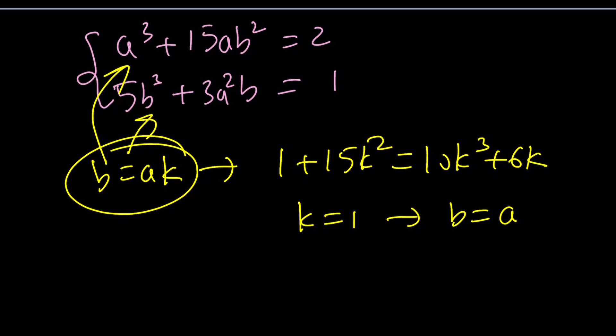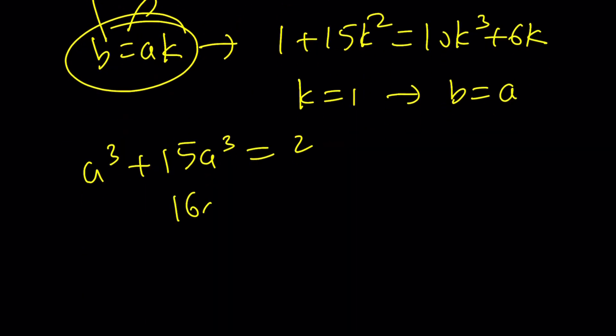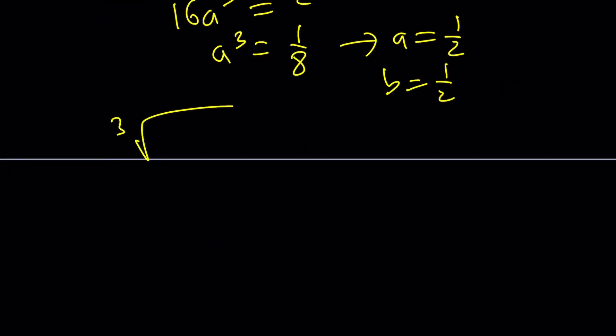that and I get 16 a cubed equals 2. a cubed equals 1/8 and a is equal to 1/2. b is equal to 1/2 and the cube root of 2 plus root 5 is a plus b root 5 which is 1/2 plus 1/2 root 5.